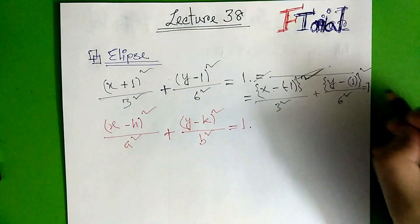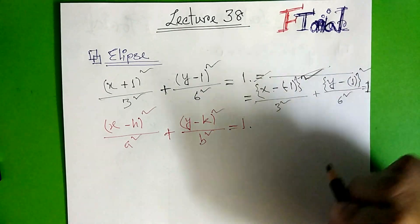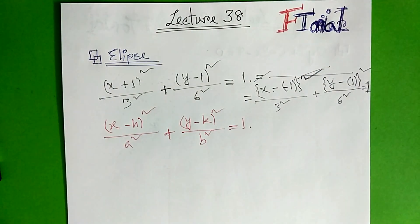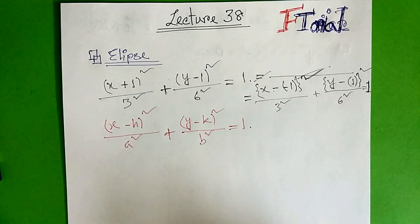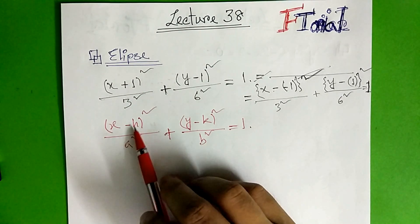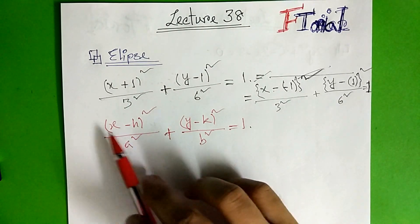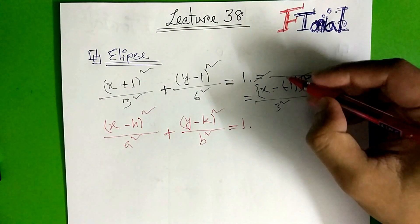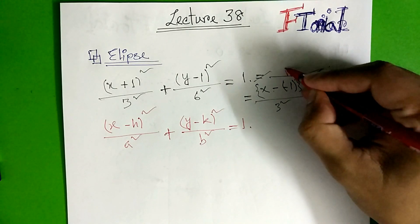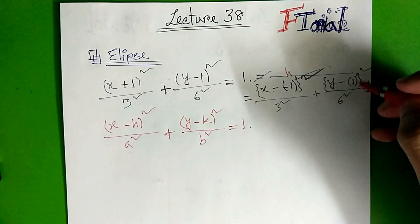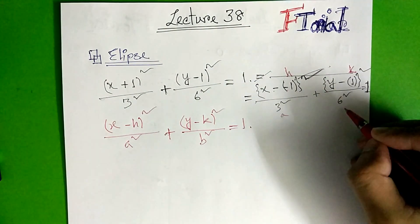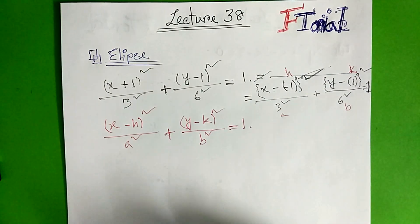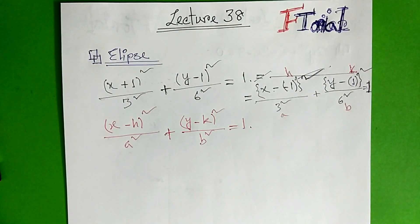So it equals 1. We can now identify the values. The h value is minus 1, the k value is 1, a equals 3, and b equals 6.